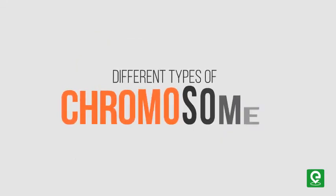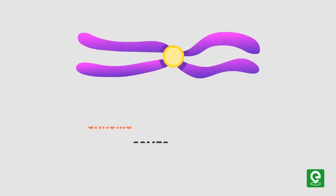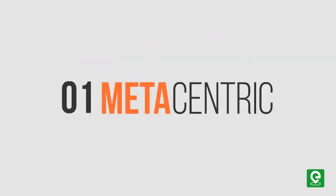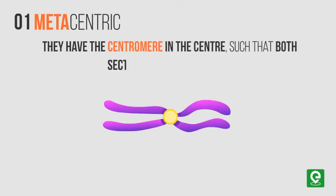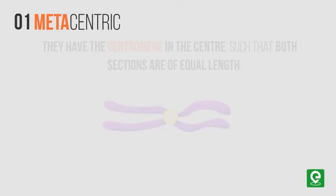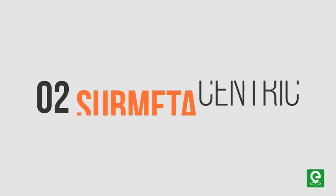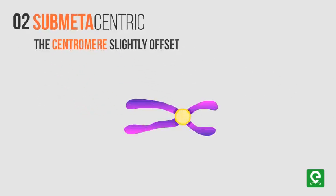On the basis of the position of centromeres, chromosomes are of mainly four types. First: metacentric chromosomes — they have the centromere in the center such that both sections are of equal length. Human chromosomes 1 and 3 are metacentric.